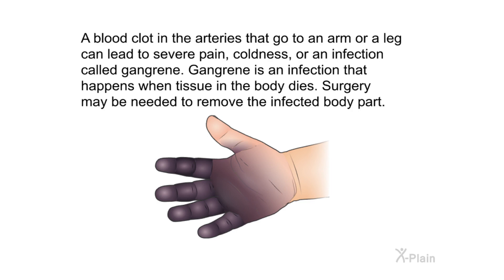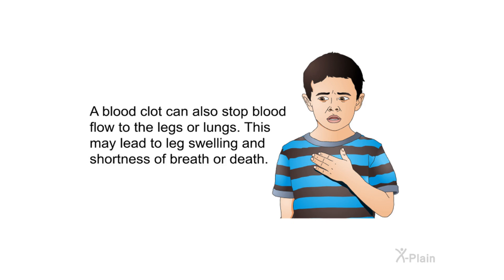A stroke can also cause total paralysis and even death. A blood clot in the arteries that go to an arm or a leg can lead to severe pain, coldness, or an infection called gangrene. Gangrene is an infection that happens when tissue in the body dies, and surgery may be needed to remove the infected body part. A blood clot can also stop blood flow to the legs or lungs, leading to leg swelling, shortness of breath, or death.